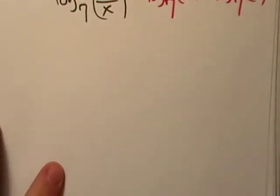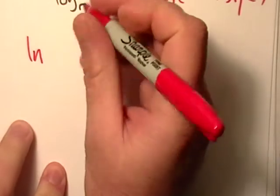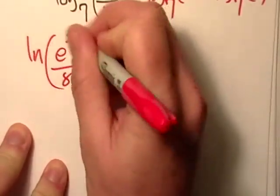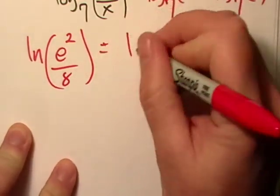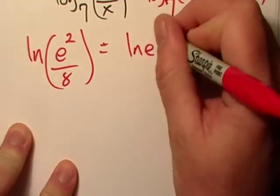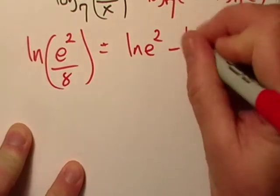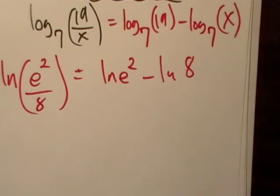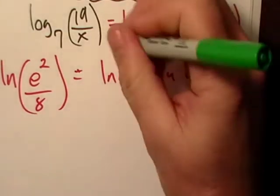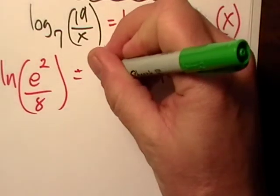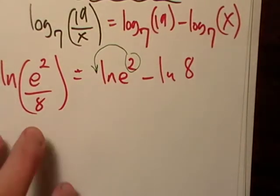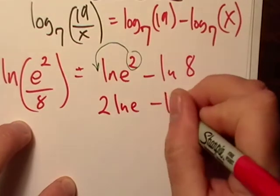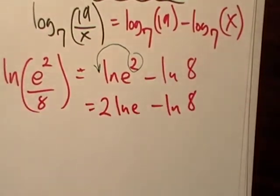Just for the heck of it, we'll throw a natural log in there. That's just equal to natural log of 2 minus natural log of 8. And if you want to take it a step further, we can use our power rule in backwards method. And then we have 2 times natural log of E minus natural log of 8.